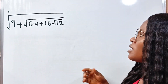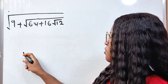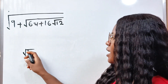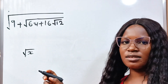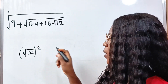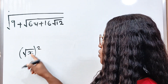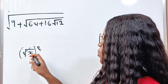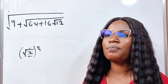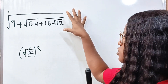First of all, I want you to note that anytime you see a square root — for example, square root of x — if you want to get whatever you have under x, you are going to square it. Whenever you square square root of x, your square will remove the root sign and you will have x. That is the idea we are going to bring into this.